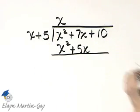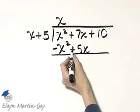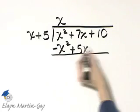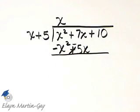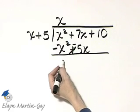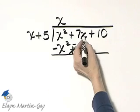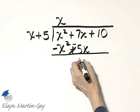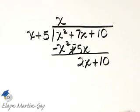Now we are subtracting, and to remind myself that I'm subtracting, I'm going to change each sign of each term along this line. So I'll make that minus. This is positive. I'll make that minus or subtracting. Now notice x squared minus x squared, that's 0, just like I want, and I have 7x minus 5x, that's 2x. I will bring down plus 10.